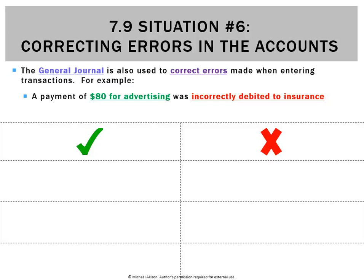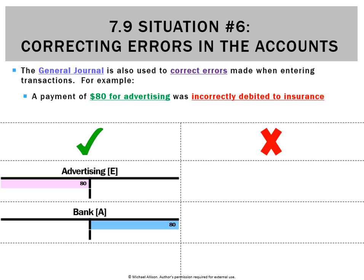In this case, a payment of $80 for advertising was incorrectly debited to insurance — let's assume no GST here, or that the GST was actually recorded correctly. Here's what should have happened: we should have had a debit to advertising and a credit to cash at bank, and nothing should have happened to insurance.